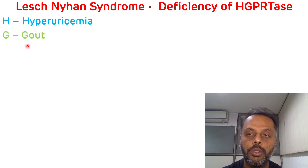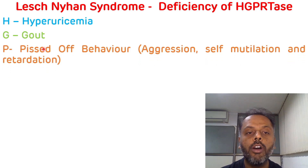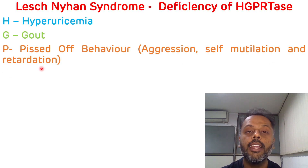So G stands for gout. Then P stands for behavioral features — that is aggression, self-mutilation, and intellectual retardation.